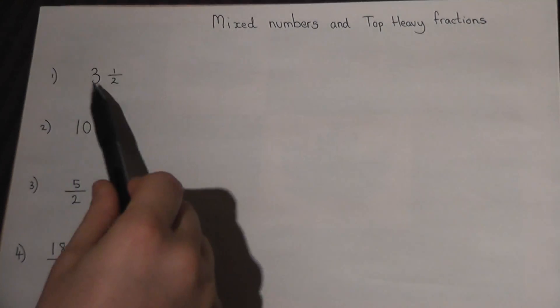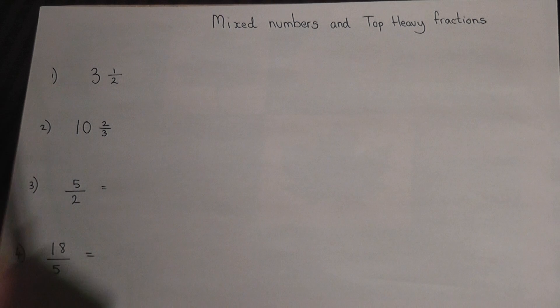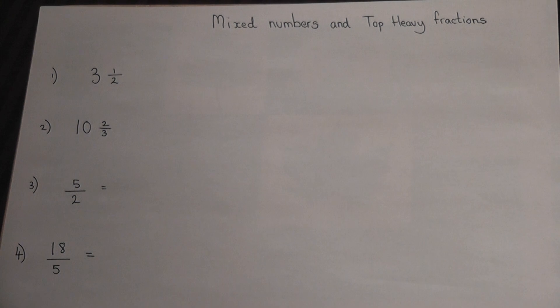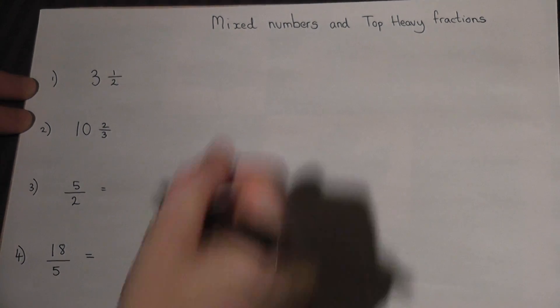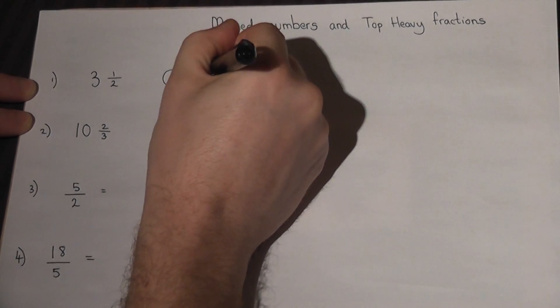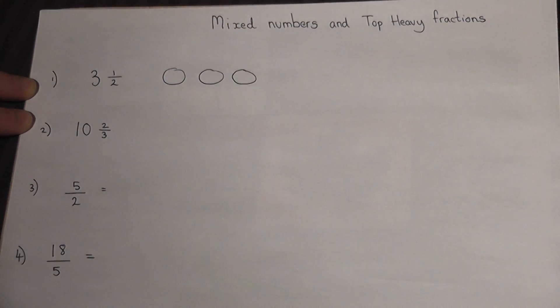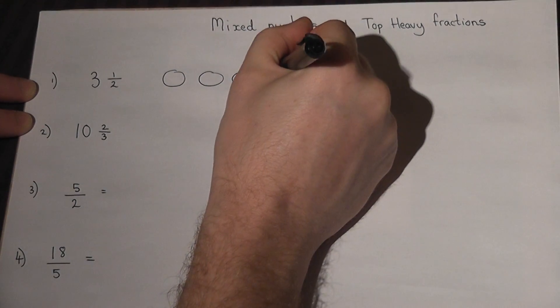Sometimes we're given what are called mixed numbers, where there's a whole number and a fraction after it. Now three and a half means three whole pieces and an extra half.